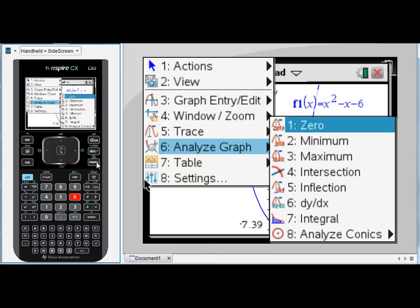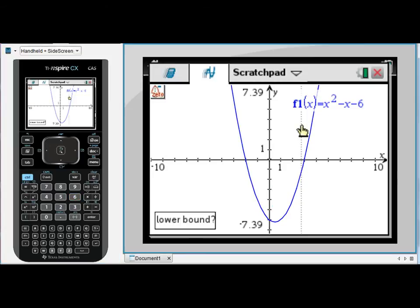So for this particular parabola, I'm interested in x-intercepts and a minimum turning point. Obviously to find x-intercepts, I'm going to choose number 1, which is Zero. Zeros are another way of referring to x-intercepts. They're talking about where the function is equal to 0.